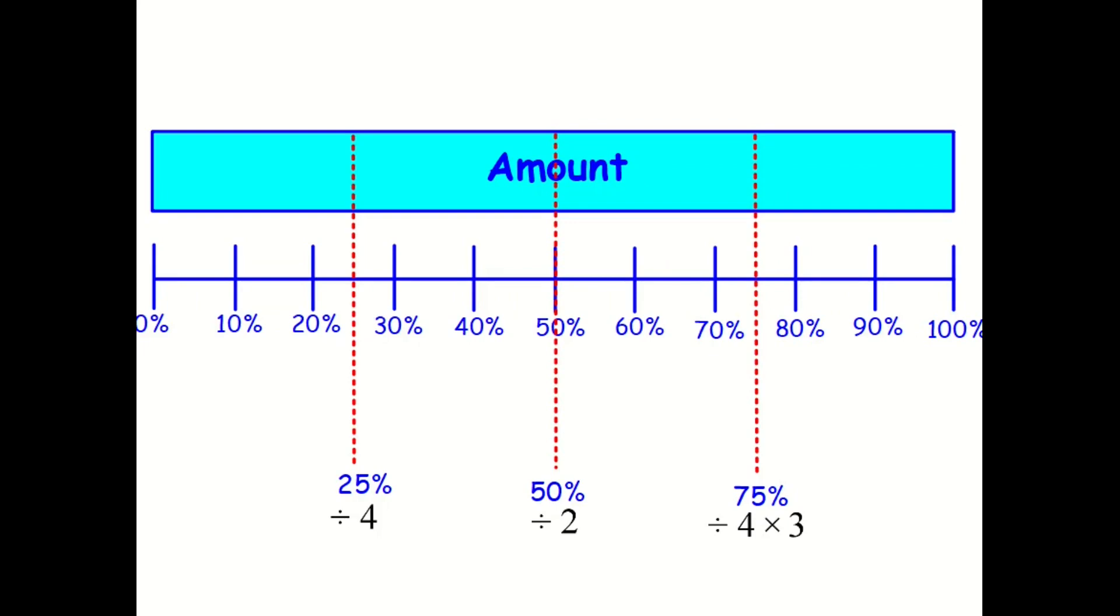With percentages of amounts such as 25%, 50% and 75%, you can use these quick tricks. For example, if you've got your full amount and you're asked for 25% of it, you're just going to be finding a quarter of it. And finding a quarter of something, we divide by 4. If you're finding half of it, you're just dividing by 2. And if you're asked for 75% of your amount, then you need to find 3 quarters of it, or divide by 4 and multiply by 3.